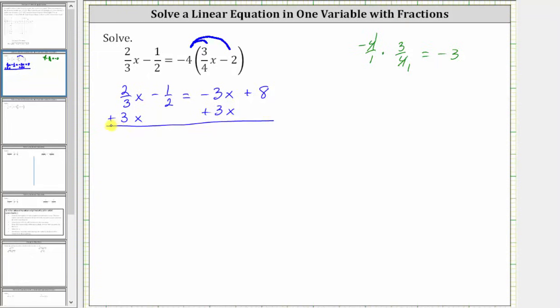Simplifying 2/3x plus 3x is 3 and 2/3x, but we want this as an improper fraction. And remember, 3 and 2/3 would have a denominator of 3, and the numerator would be 3 times 3, which is 9, plus 2, which is 11. And therefore, 2/3x plus 3 is 11/3x.